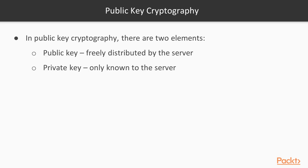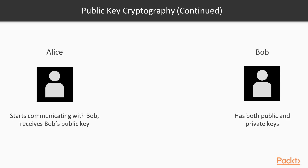A quick introduction to public key cryptography. In public key cryptography there are two elements: the public key that is fully distributed by the server, and a private key that is only known by the server. In cryptography, we will have two users — we will call them Alice and Bob. Bob will be our server and Alice will be our client.